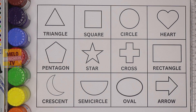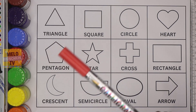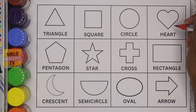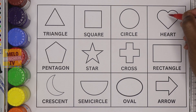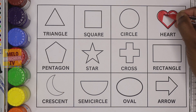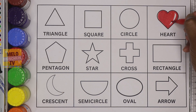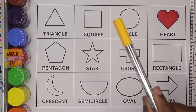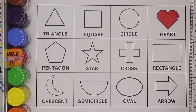Without much ado, let's get started. First, I'll take red color — this is red color — and I'll use this color to fill this shape. This is heart. This is heart. Let's color it. Okay, so this is heart shape and the color is red color.